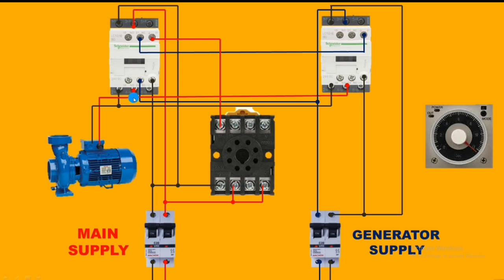For the working: if the main power supply is running, the house load will run on the main power supply. If the main power supply is cut, the house load automatically transfers to the generator power supply. If the main power supply comes again, first the timer will operate, and after completing the delay time, the house load will transfer back to the main power supply. I hope you are clear on how to make a standard automatic changeover switch. If you like this video, please press the like button. We'll meet in the next video.